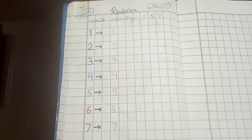Okay kids. Like this, you have to write counting 1 to 7, 3 times. 1, 2, 3, 3 times.